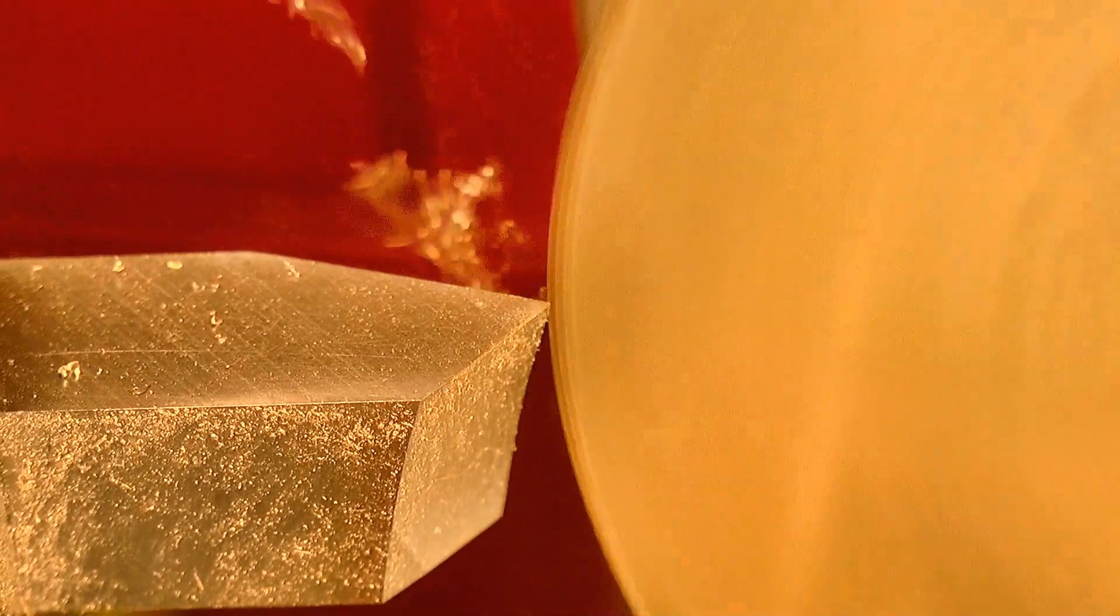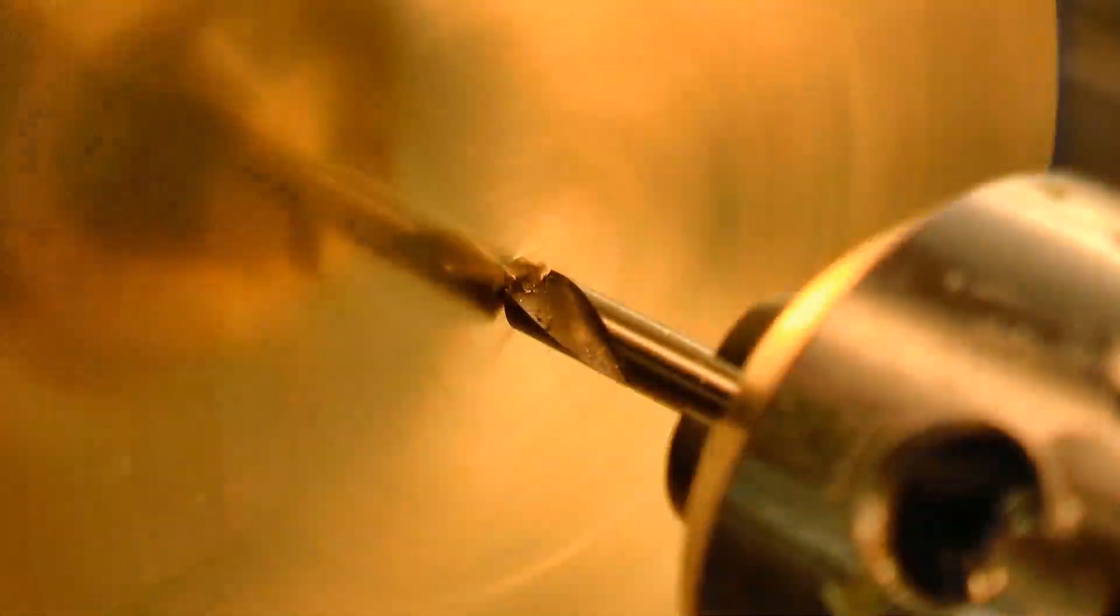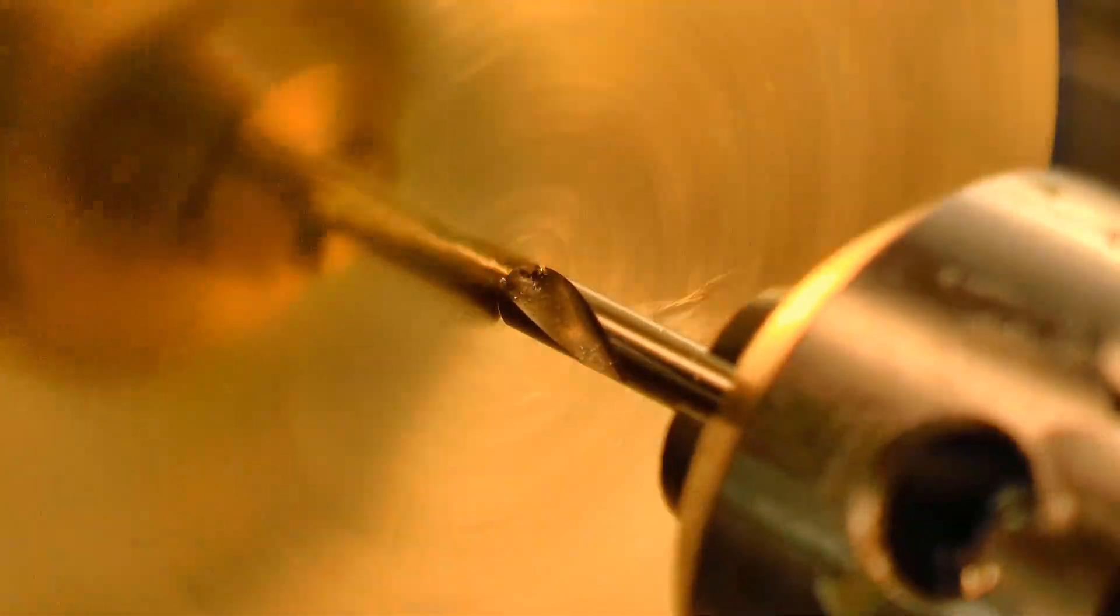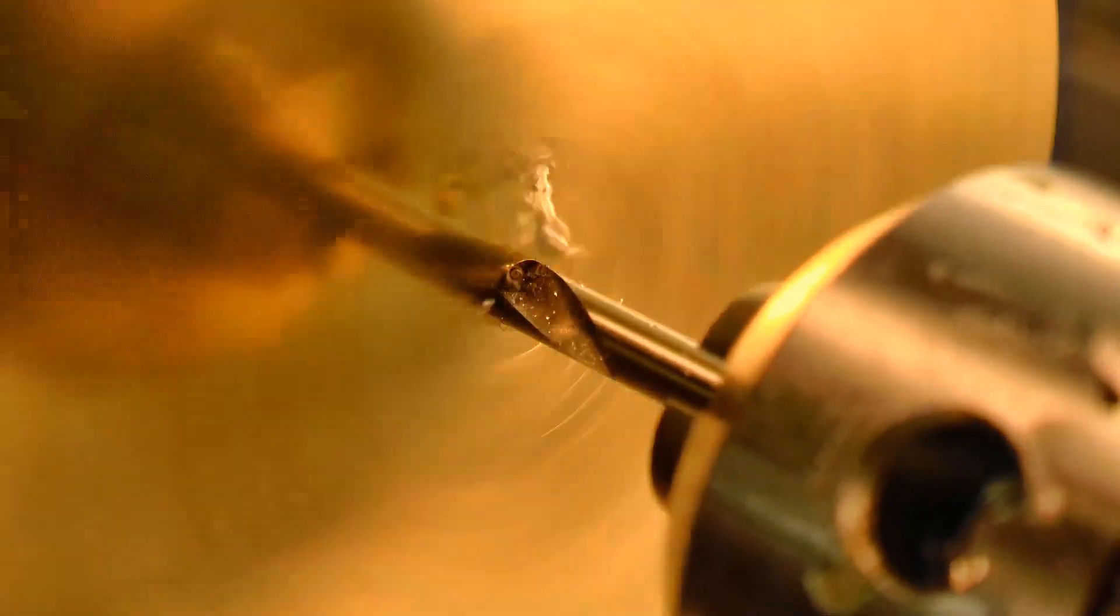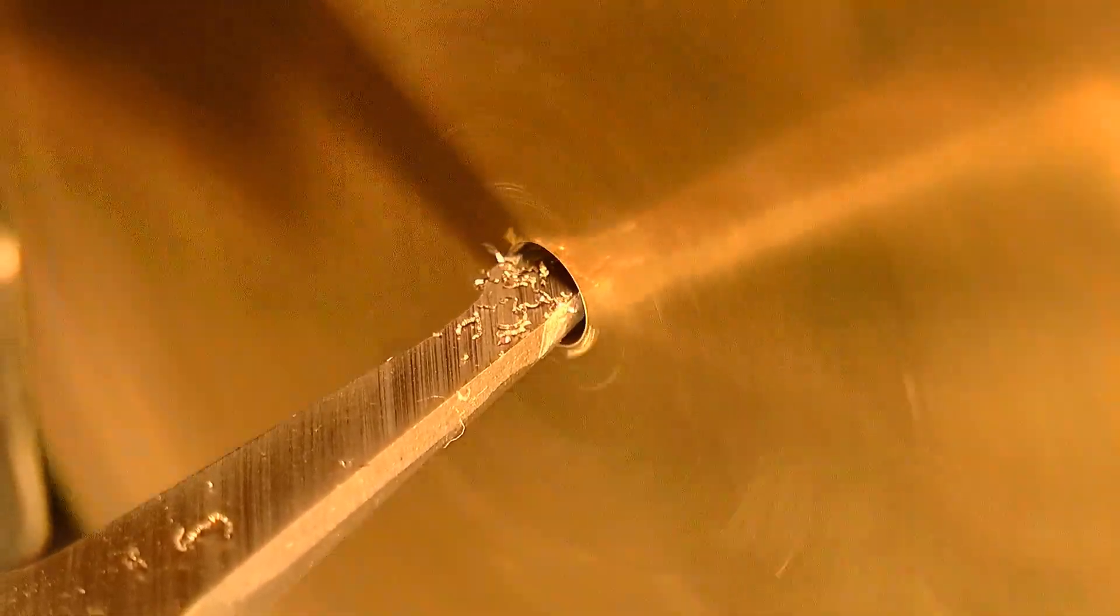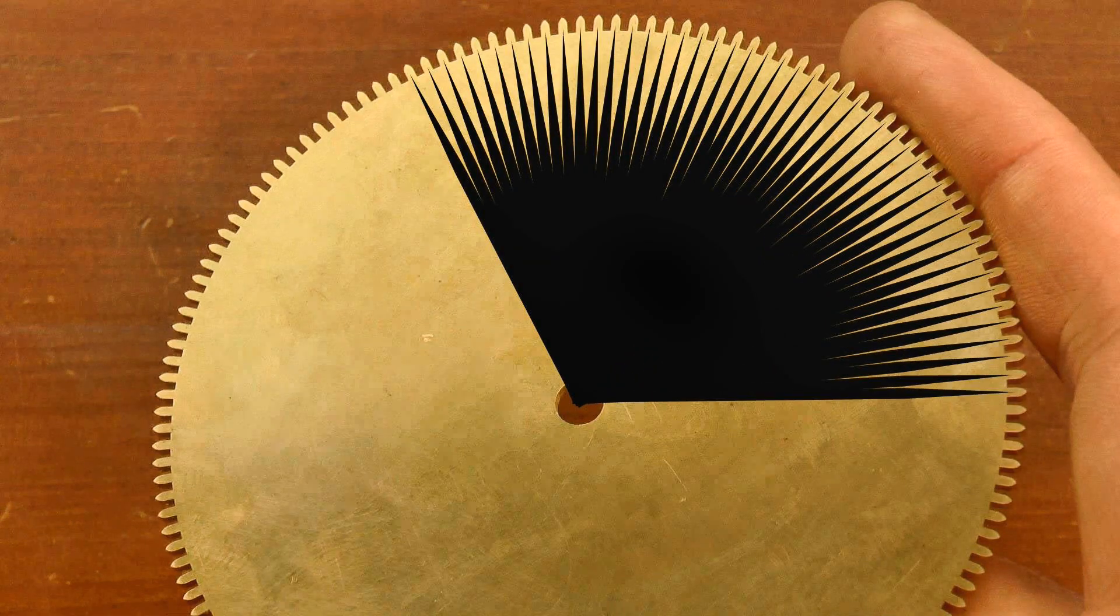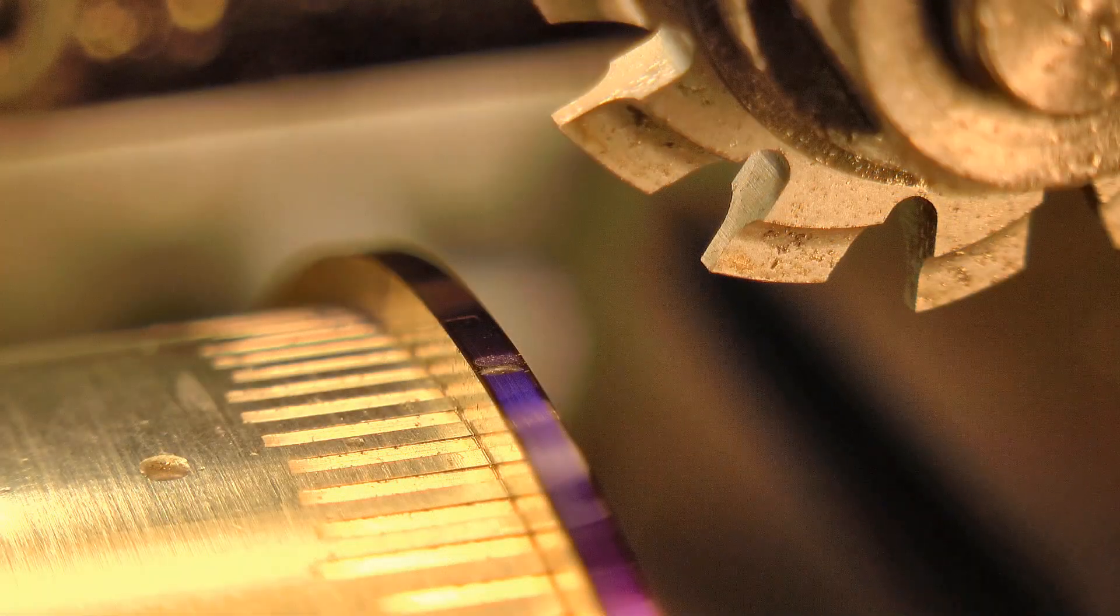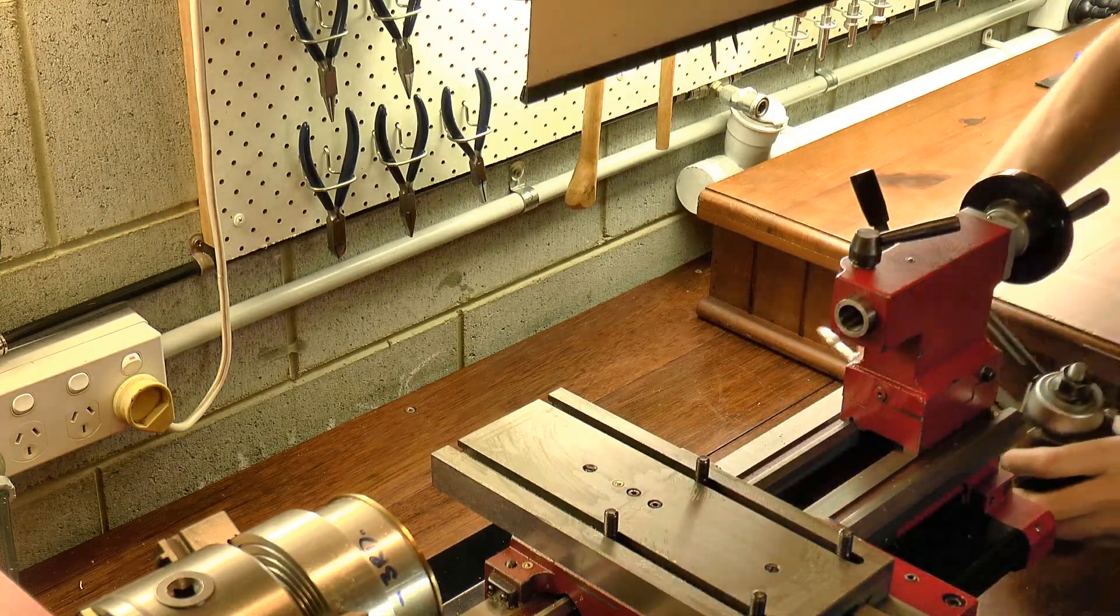I turned the blank to the correct outside diameter, and then drilled and bored the hole to the correct size. So I need to be able to divide the work, and also make the cuts to form the teeth. There are probably as many ways to do this as there are lathes, but this is how I do it.